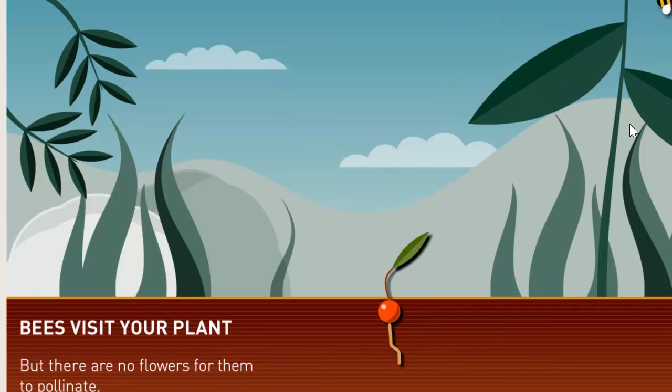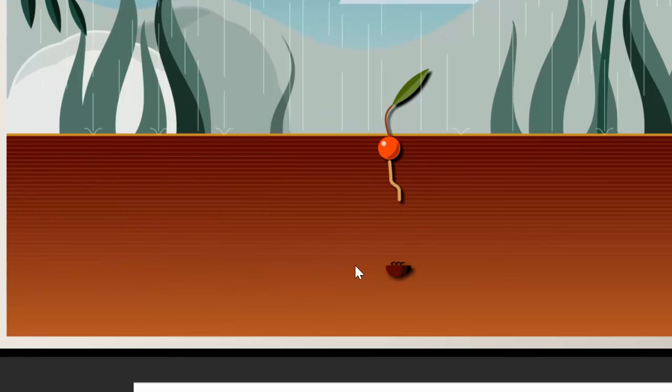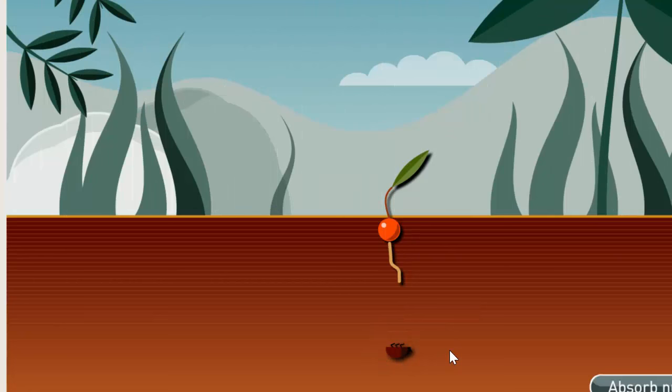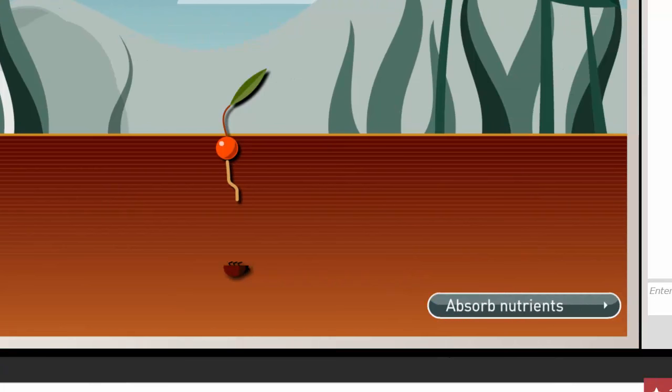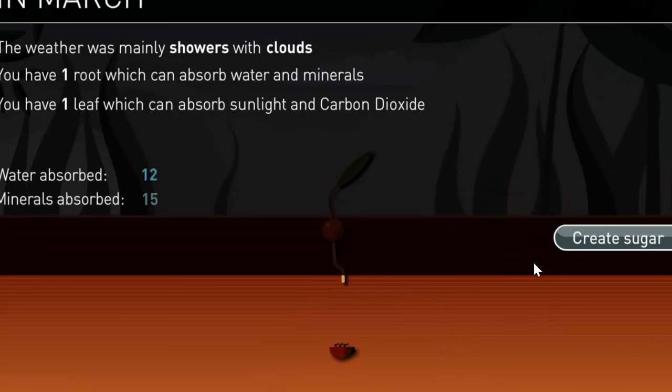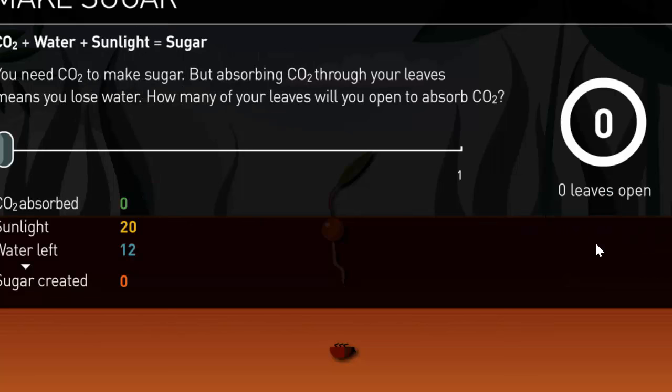We're going to click on finish, and look at that, bees. The bees are coming, but there are no flowers for them to pollinate. Bees are one of the more important factors for plants to reproduce. They need to be pollinated. And look at that, there's a little beetle, and oh no, the beetle died. That's not good, or is it? Now we can actually use the beetle to basically eat it and get some materials from it. We're going to click on this button that says absorb nutrients. And now we're going to absorb minerals and water. Water absorb 12, minerals absorb 15.